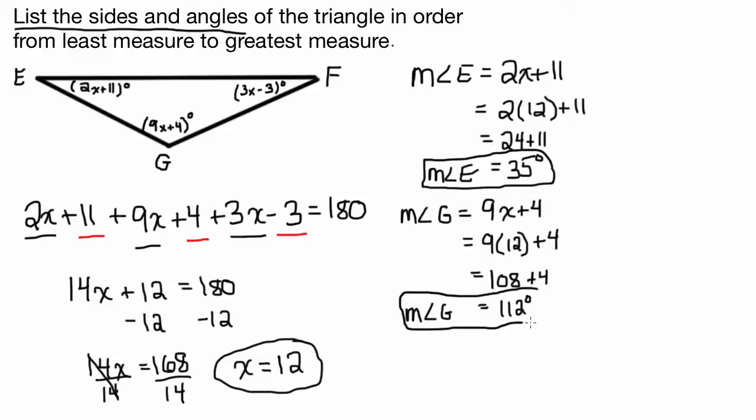And then we have one more to go. So now we're looking at the measure of angle F. So for the measure of angle F, we know that the measure of angle F is 3x minus 3 degrees. We substitute in 12 for x. It's going to be 3 times 12 minus 3, which is 36 minus 3, which is going to be 33. So the measure of angle F is 33.